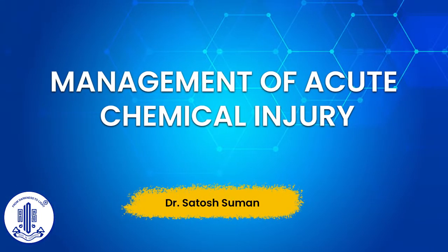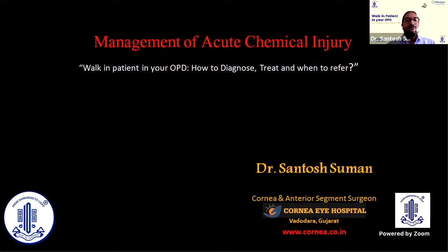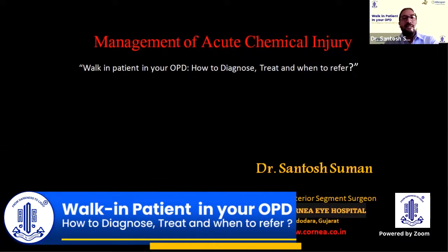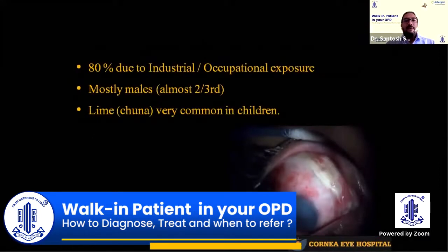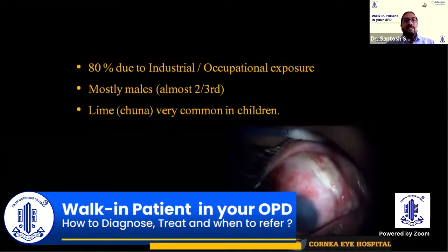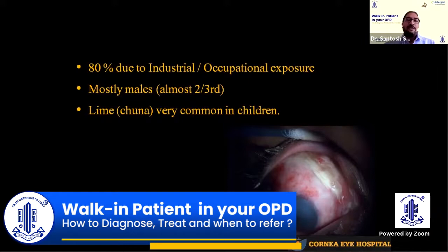Chemical injuries of the eye are ophthalmic emergencies which need immediate intervention so that grave complications can be avoided and visual recovery can be maximized. I am in a referral kind of practice where most of my patients are referred after industrial or occupational exposure, and most of these patients are male. A small subset of female patients have chemical injury due to household acid or phenyl.